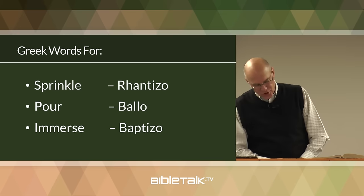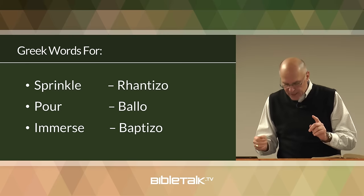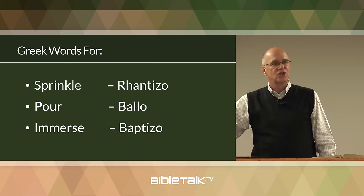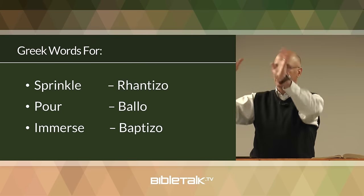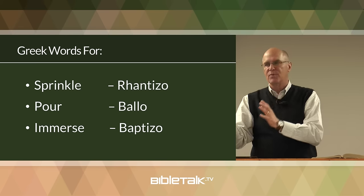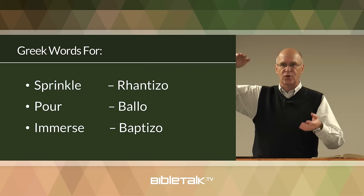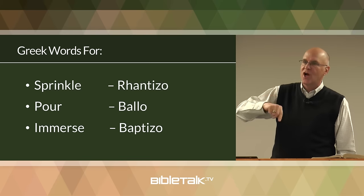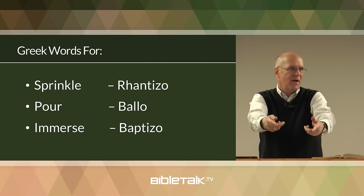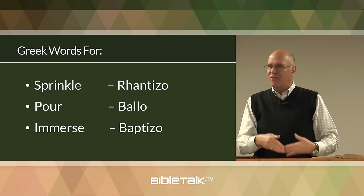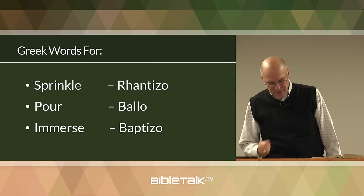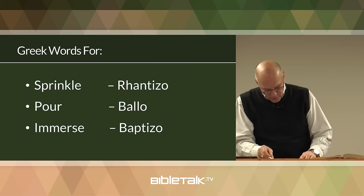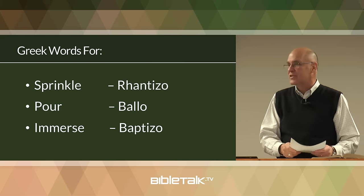Jesus' own baptism by John was the turning point in the ministry of each of these two men. It was the beginning of Jesus' ministry and the climax and beginning of the descent of John's ministry — not that John did anything wrong, but he had achieved his purpose when Jesus came to be immersed. After that, the crowds following John lessened and the crowds following Jesus became greater. Matthew is the only gospel that records John's protest — 'I'm not supposed to baptize you; you should be baptizing me.'